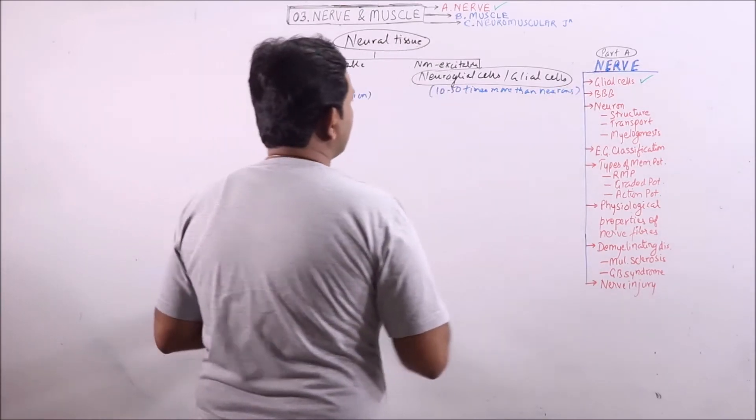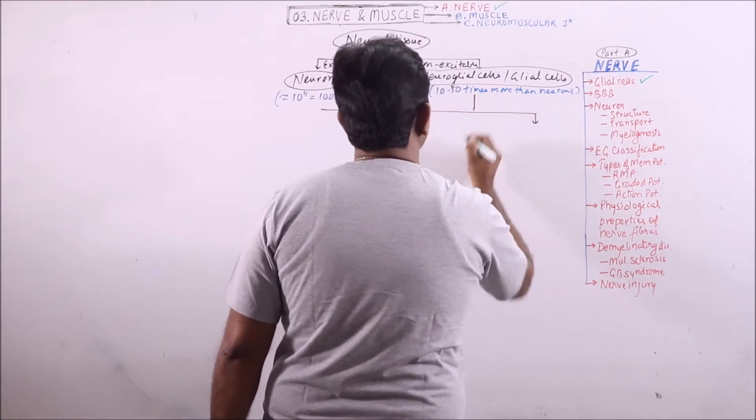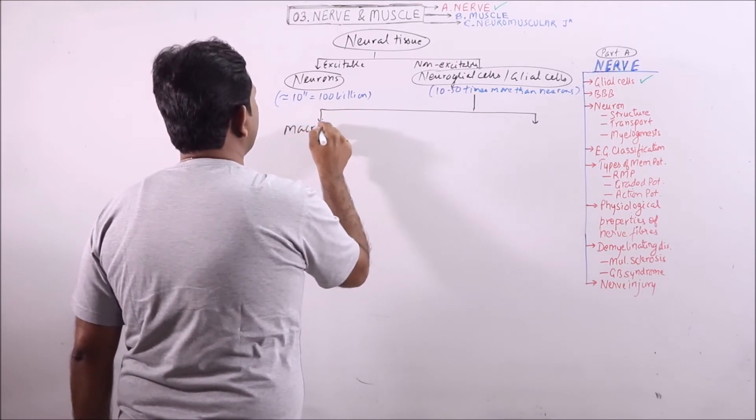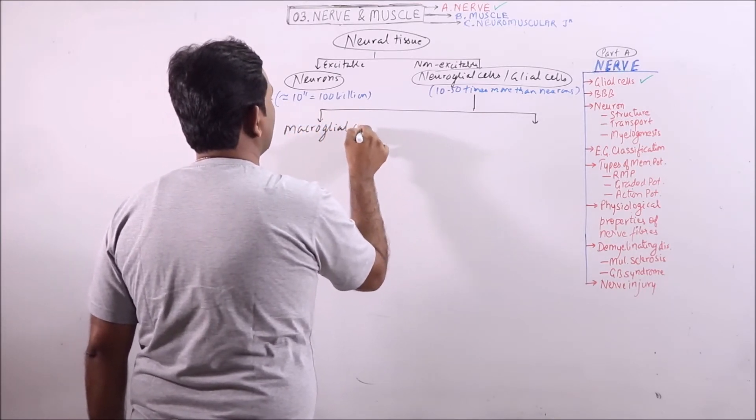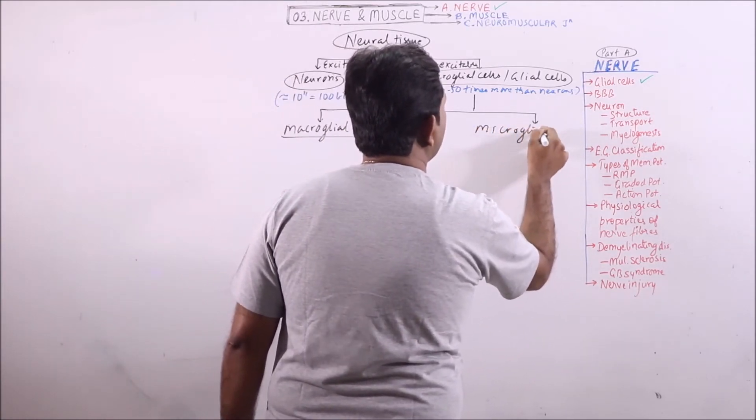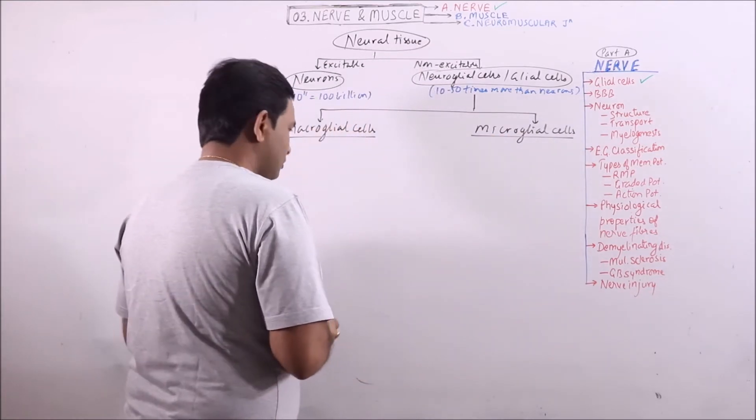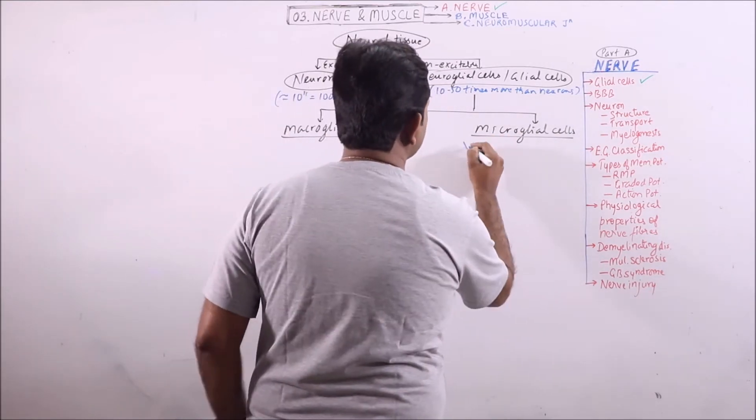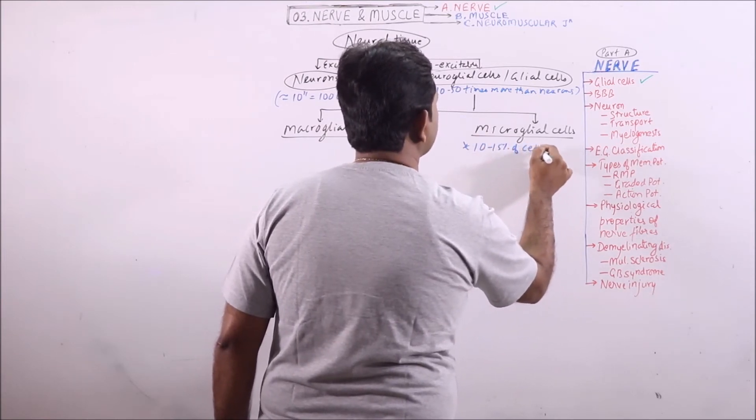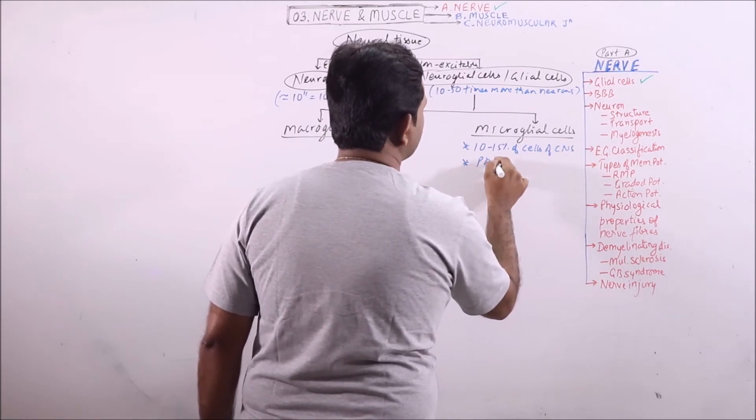Now if we classify the neuroglial cells on the basis of size, then macroglial cells and microglial cells can be observed. Microglial cells are 10 to 15 percent of cells of CNS. These are phagocytic cells.